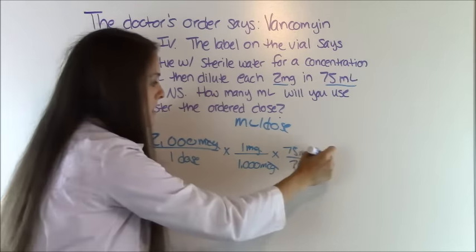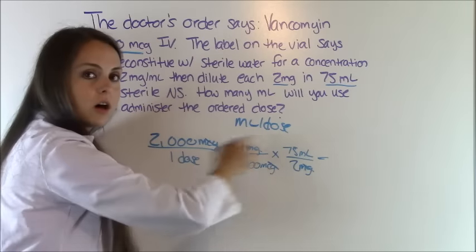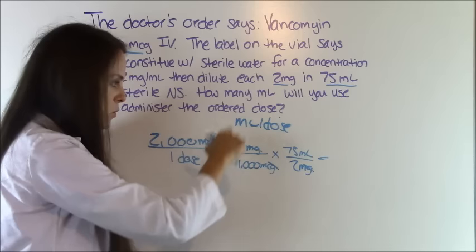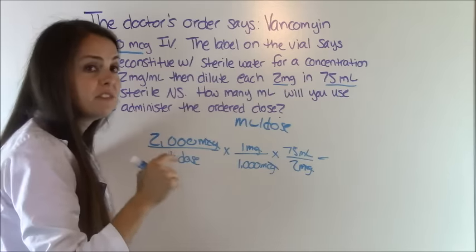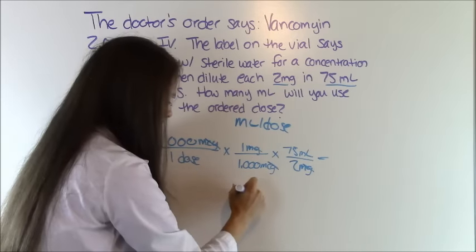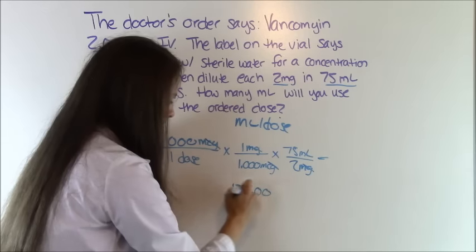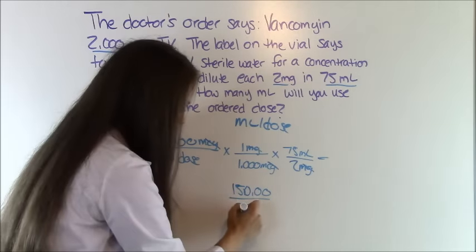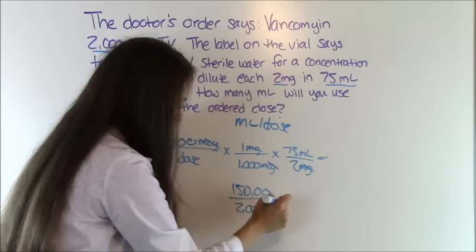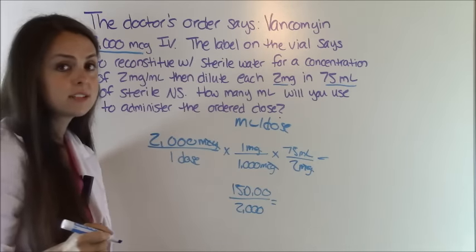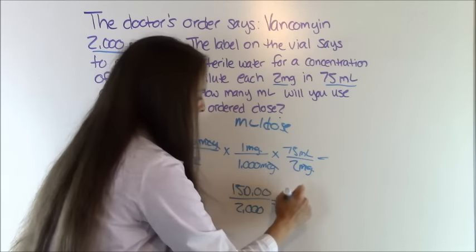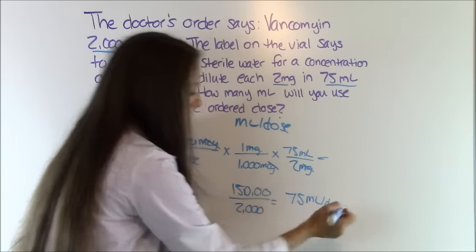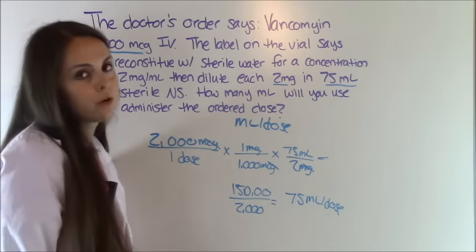Milligrams cancel out and we are at milliliters per dose — ready to solve. Multiply everything on top, multiply everything on the bottom, then divide. 2,000 times 1 times 75 equals 150,000. 1 times 1,000 times 2 equals 2,000. 150,000 divided by 2,000 equals 75. The answer to this problem is 75 milliliters per dose.